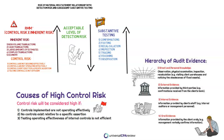That means sending confirmations to banks or accounts receivable customers. In some cases, we're only going to be able to get internal evidence, which means we just request invoices, inspect, and re-perform. And then worst case scenario, we just perform inquiry, and that gives us oral evidence. When detection risk is set at low, that is because control risk is high, and ultimately we just need to perform a higher level of substantive testing procedures.